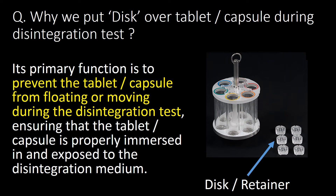Why do we put a disc over the tablet or capsule during the disintegration test? Its primary function is to prevent the tablet or capsule from floating or moving during the test, ensuring that it is properly immersed in and exposed to the disintegration medium. You can see the adjacent photograph of the disc that we put over the tablet or capsule during the disintegration test.